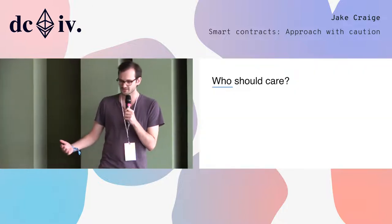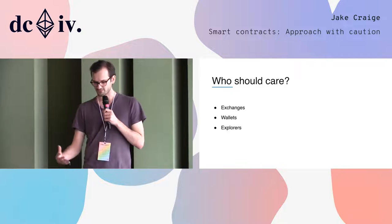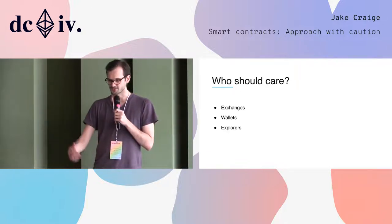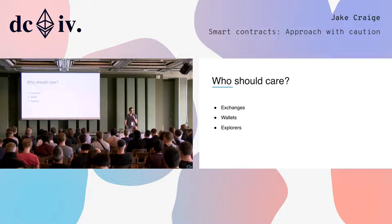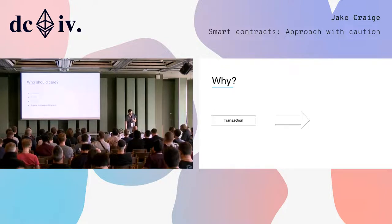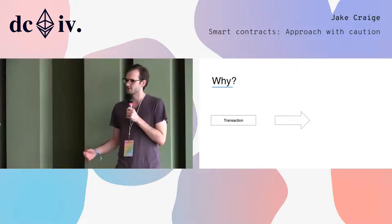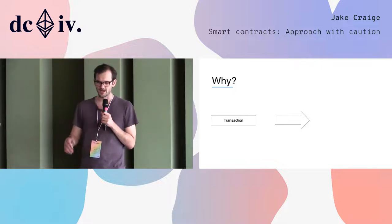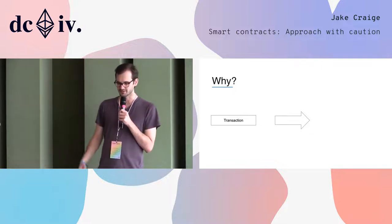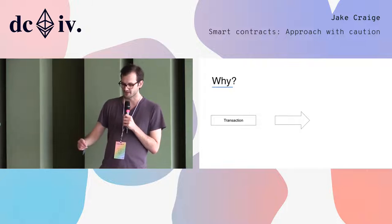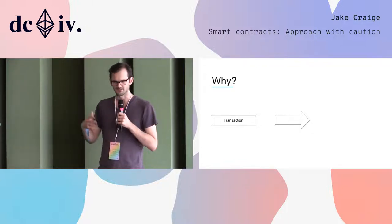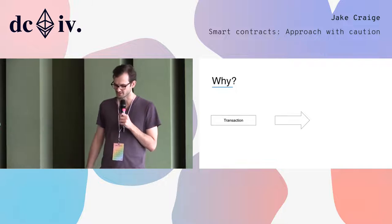Who should care about this? The primary three are exchanges, wallets, and explorers. The highest risk comes to exchanges, which we'll talk about, but it really matters for everybody building on Ethereum. If you're accepting deposits of any sort of Ethereum, there are different ways it can happen, and your primary responsibility is to take a transaction and turn that into a set of debits and credits to accounts.